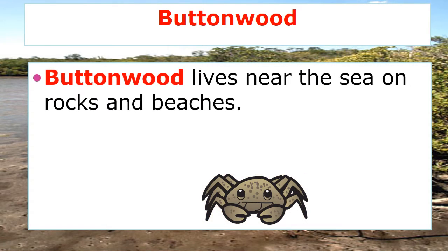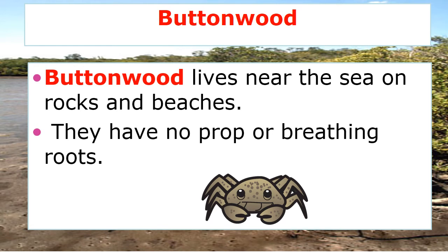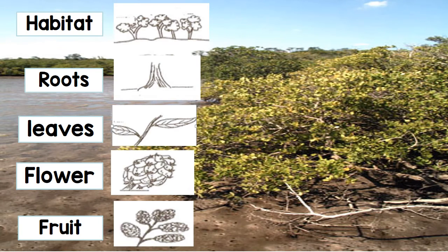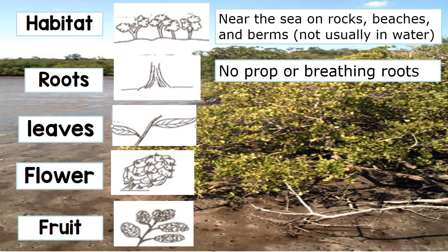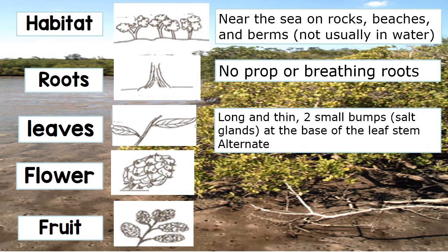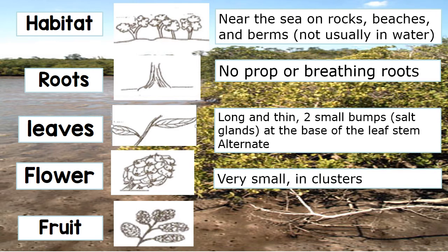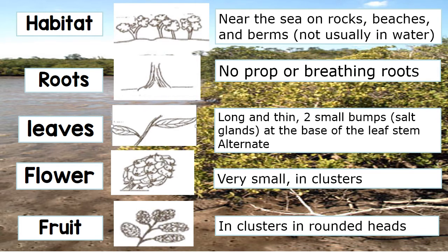The fourth mangrove is the buttonwood. The buttonwood lives near the sea on rocks and beaches. They have no prop or breathing roots. The habitat is near the sea, on rocks or the beach, not usually in water. The leaves are long and thin with two small bumps — salt glands — at the base of the leaf or stem, and they are alternate. The flower is very small and is in clusters. The fruit is also in clusters and has rounded heads.